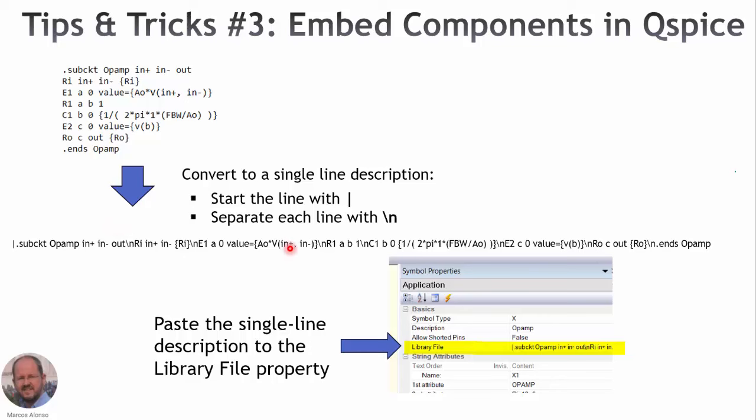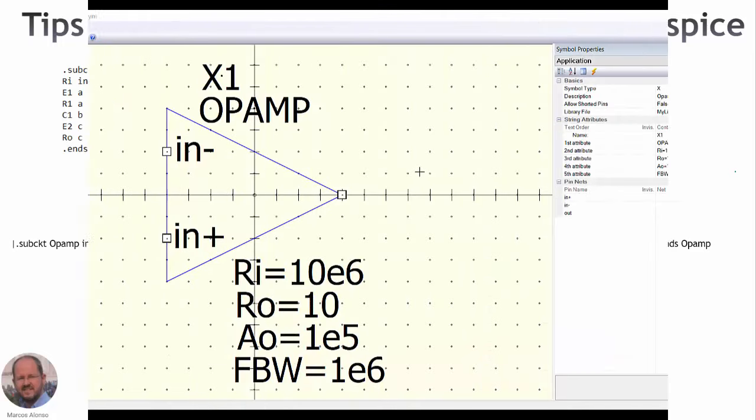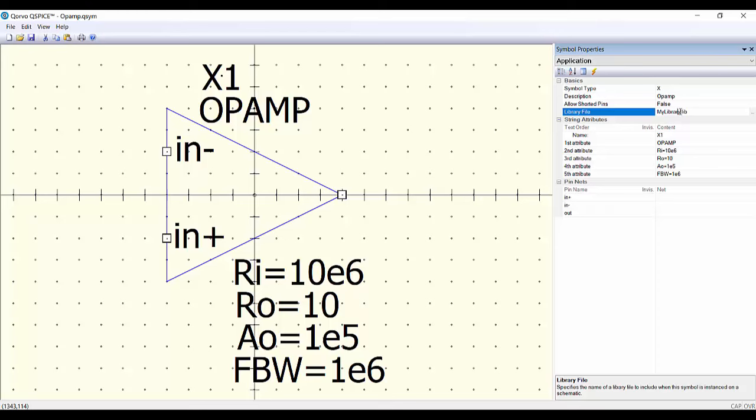Then we copy all this information into the library file property as shown here. And this is all. We save our component and then we can use our component in the simulation file. So this is the way to do it. We just remove the library and we paste here the complete description of our component.